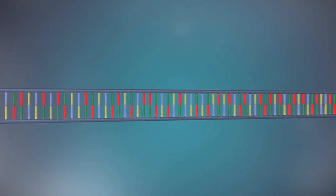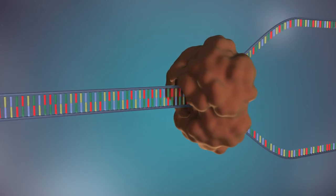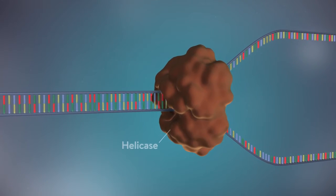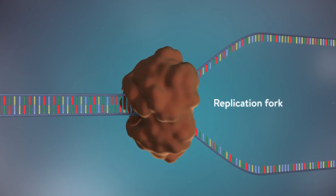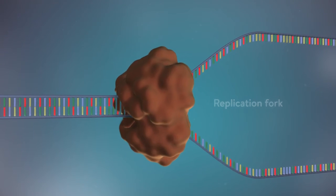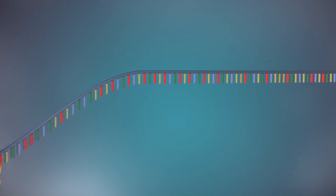The first step in DNA replication is to separate the two strands. This unzipping is done by an enzyme called helicase and results in the formation of a replication fork. The separated strands each provide a template for creating a new strand of DNA.